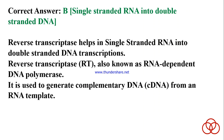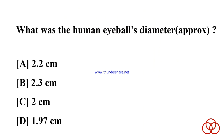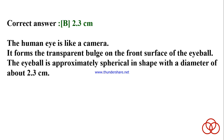What is the human eyeball's diameter? A) 2.2 centimeters. B) 2.3 centimeters. C) 2.0 centimeters. D) 1.97 centimeters. Correct answer: B. 2.3 cm. The human eye is like a camera. The eyeball is approximately spherical in shape with a diameter of about 2.3 centimeters.